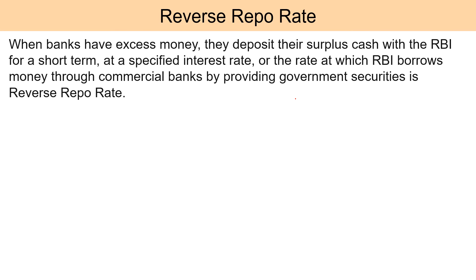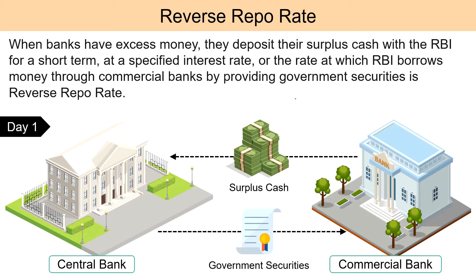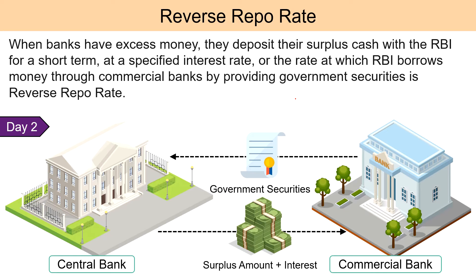Coming to Reverse Repo Rate. When banks have excess money, they deposit their surplus cash with RBI for a short term at a specified rate — that is, the rate at which RBI borrows money from commercial banks by providing government securities. This is called the Reverse Repo Rate. An increase in the reverse repo rate acts as an incentive to banks to deposit their excess funds with RBI for a short term against collateral and earn interest at lucrative rates on an overnight basis. In this way, the liquidity in the economy will be absorbed. However, when RBI reduces the reverse repo rate, banks will earn less interest on their money deposited with RBI. So banks will invest their money in other investment avenues with comparatively higher interest rates, such as money market instruments, thereby increasing the overall liquidity in the economy as more money is infused into the system.